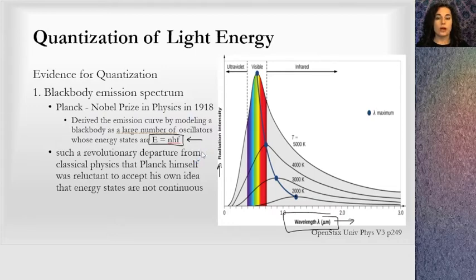And this was not anticipated at all, and that's why Planck won his Nobel Prize. This was such a revolutionary departure from classical physics that Planck himself did not even want to accept these results, that energy states are not continuous. At a classical level, we can have energy, any energy. It's a continuum. But when we look at black body emission and this radiation, it's not continuous. There's only quantized values allowed.